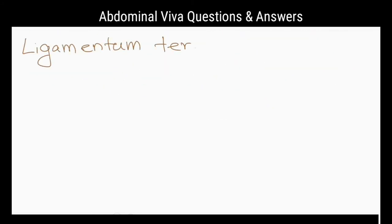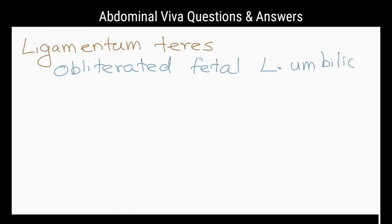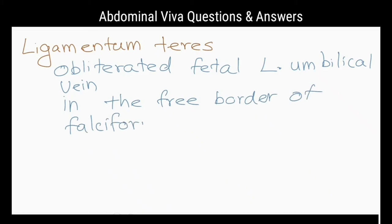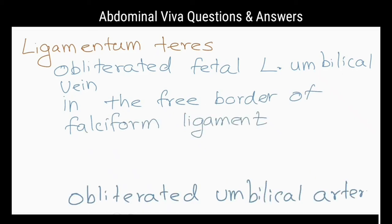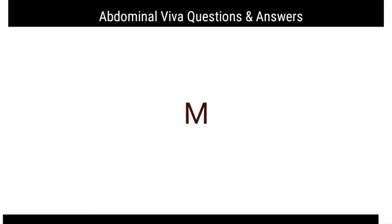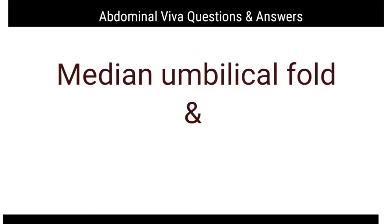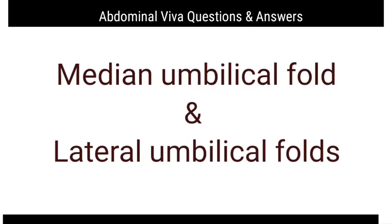What is ligamentum teres? It is the obliterated fetal left umbilical vein in the free border of the falciform ligament. What is formed by the obliterated umbilical arteries? The medial umbilical folds. What forms the medial and lateral umbilical folds? The medial umbilical fold is formed by the obliterated fetal urachus. The lateral umbilical fold is formed by the peritoneal covering of the inferior epigastric vessels.